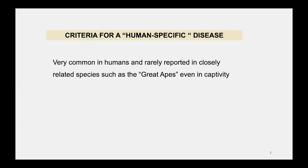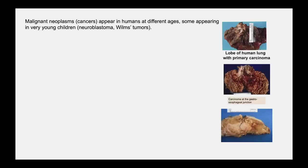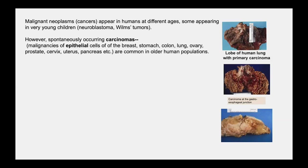So what are the criteria for a human-specific disease? It should be very commonly seen in humans and rarely reported in closely related species such as the great apes, even in captivity. Malignant neoplasms or cancers appear in humans at different ages, some appearing in very young children, like neuroblastoma and Wilms tumors.